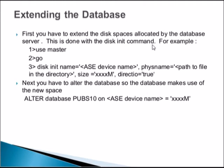To extend the database, first extend the disk space allocated by the database server using the DISK INIT command — for example: USE MASTER GO DISK INIT name = device_name, physname = physical_name. Then alter the database to use the new space: ALTER DATABASE database_name ON device_name = size. Manually extending space is as simple as: first adding a device, and second specifying that device in the ALTER DATABASE command.